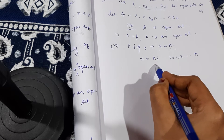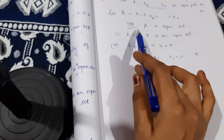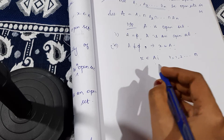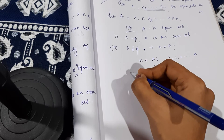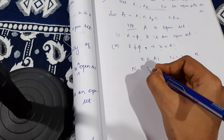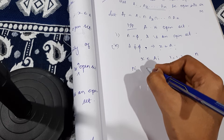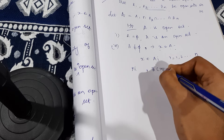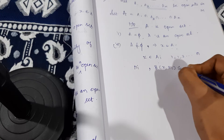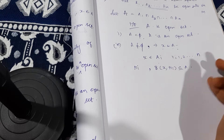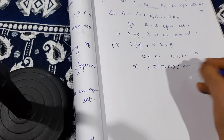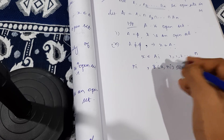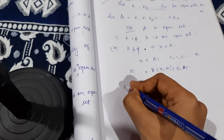Since x is in Aᵢ and Aᵢ is an open set, by the definition of open sets there exists rᵢ, a positive integer, such that the open ball B(x, rᵢ) is a subset of Aᵢ.